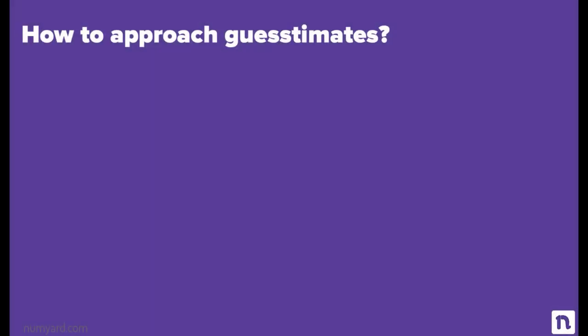How to approach guestimates: the first step is to understand the question and clarify. Try to extract exact information from the interviewer on what he wants you to calculate. Using the previous example, it's not clear which AC the interviewer is talking about, since ACs are installed in houses, vehicles, offices, industries, etc. Clarify whether the interviewer wants to know the total ACs in houses or if it includes vehicle and industrial ACs as well. Always ask first before you attempt any guesstimate.